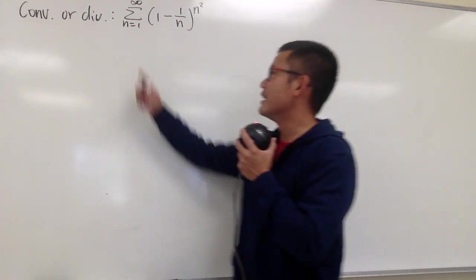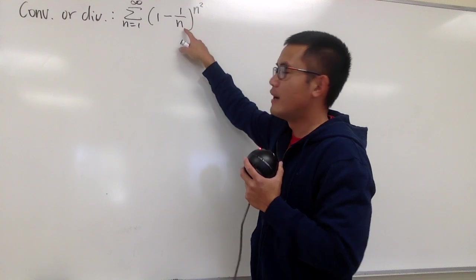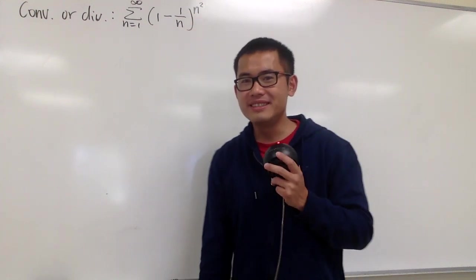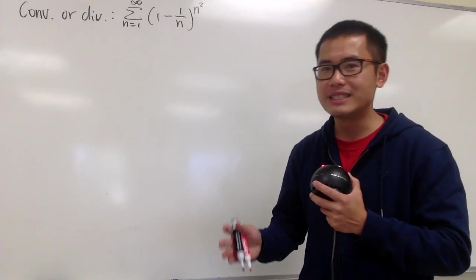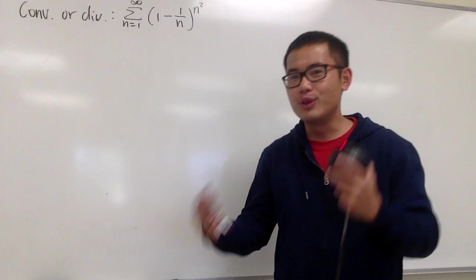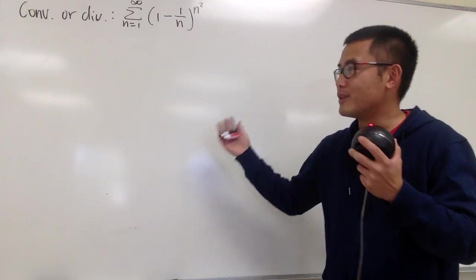Okay, what if we have the series as n goes from 1 to infinity, 1 minus 1 over n, raised to the n squared power. This is also very similar to the ones that we have done in the past. And now, let's see what we can do with this. Maybe this still diverges, maybe it happens to converge, I don't know.